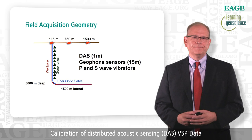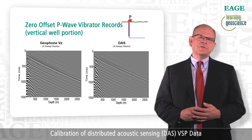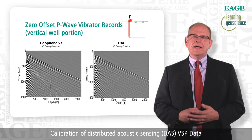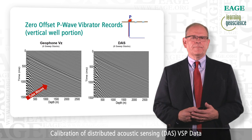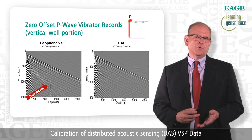First, we compare the vertical component geophone and the DAS VSP records using the P-wave vibrator. This figure shows the zero offset P-wave record for the geophone in the left panel and the DAS record in the right panel. The geophone record is from 6 sweeps, and the DAS record used 8 sweeps. We have excellent similarity. One rather interesting difference, though, is that there are more tube waves on the geophone record than on the DAS record. Generally speaking, we try to get rid of those tube waves, so this is actually a benefit of DAS.